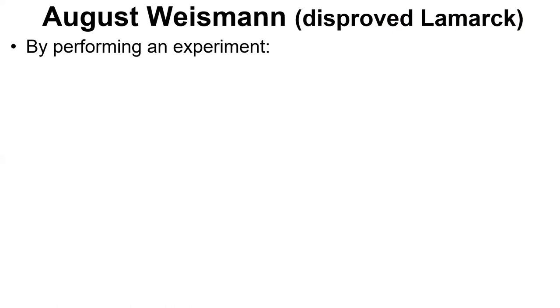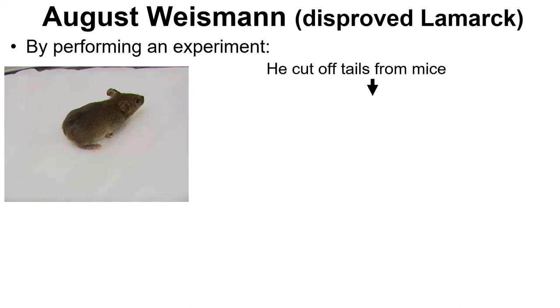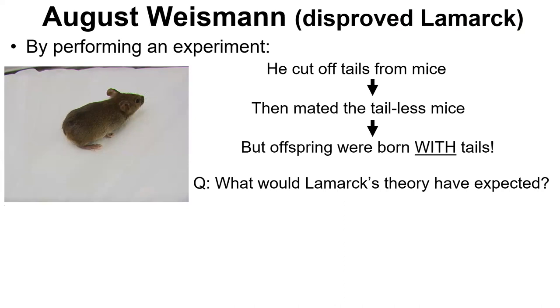Weismann said, 'Hey Lamarck, you're wrong. You can't inherit an acquired characteristic. Watch how easy this is to disprove.' He cut the tails off of mice and mated mice that had no tails. If Lamarck was right, then the babies should have no tails. But guess what happened? The babies had tails. So Lamarck's theory was disproven with a pretty simple chopping-the-tails-off-of-mice example.